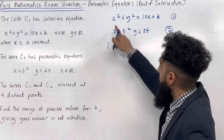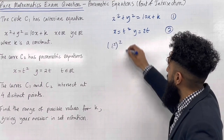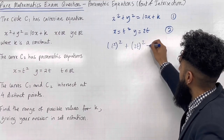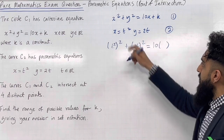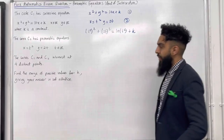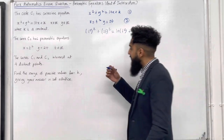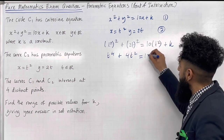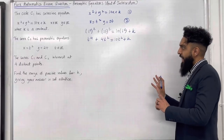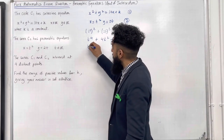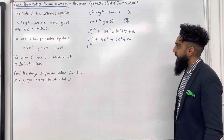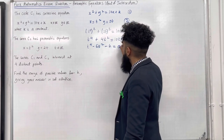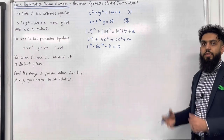Substituting equation 2 into equation 1: replace x with t squared and y with 2t. So we get (t squared) squared plus (2t) squared equals 10(t squared) plus k. Simplifying gives t to the power 4 plus 4t squared equals 10t squared plus k. Taking everything to the left-hand side gives t to the power 4 minus 6t squared minus k equals 0.